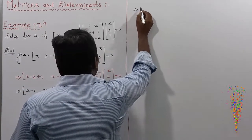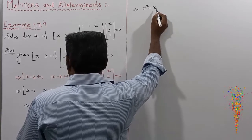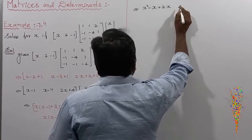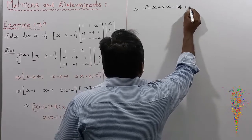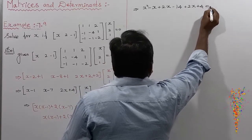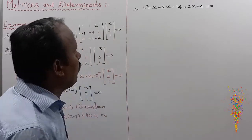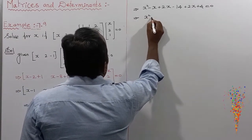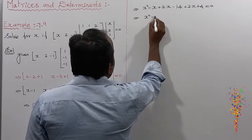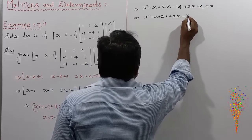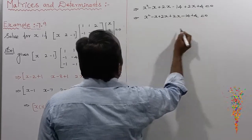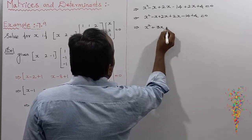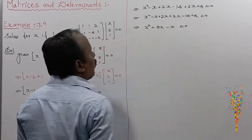Expanding gives: x² - x + 2x + 2x - 14 + 4 = 0, which simplifies to x² + 3x - 10 = 0. This is a quadratic equation with two solutions.